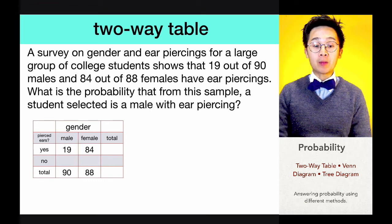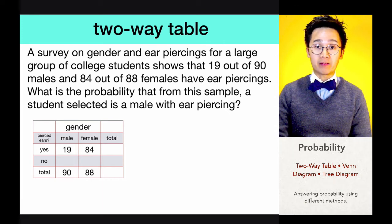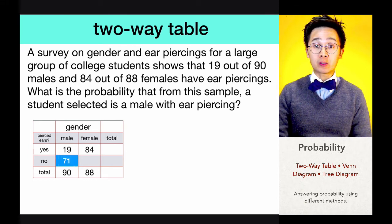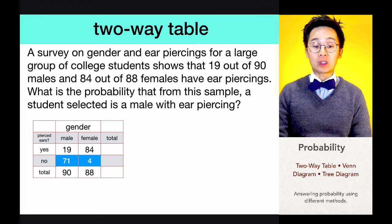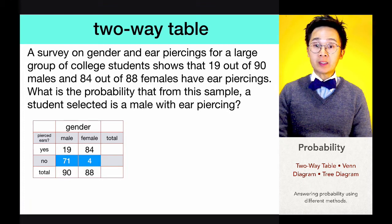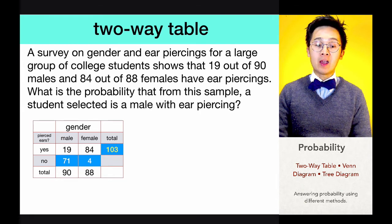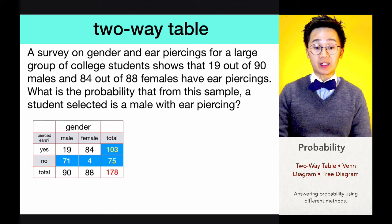The complement of each group would be students who don't have ear piercings. So for the male sample, 71 students don't have ear piercings, and 4 of the females surveyed have no ear piercing. We complete our two-way table by adding up the columns: 19 plus 84 gives the sum of students with ear piercings, and 75 without, for a total of 178.